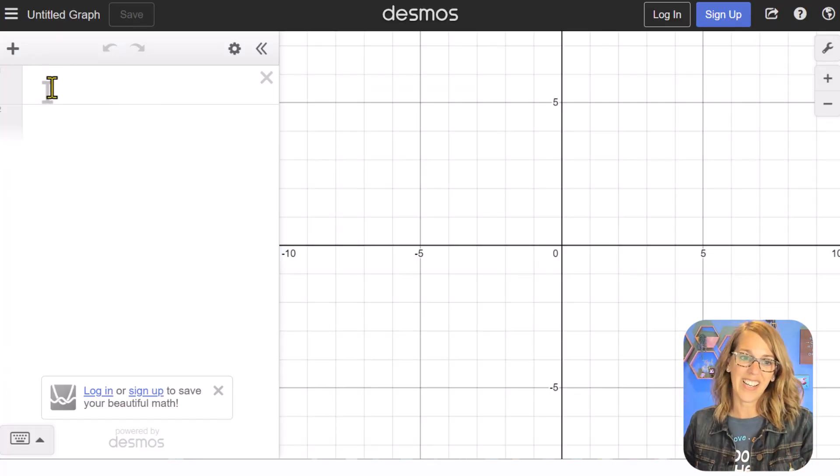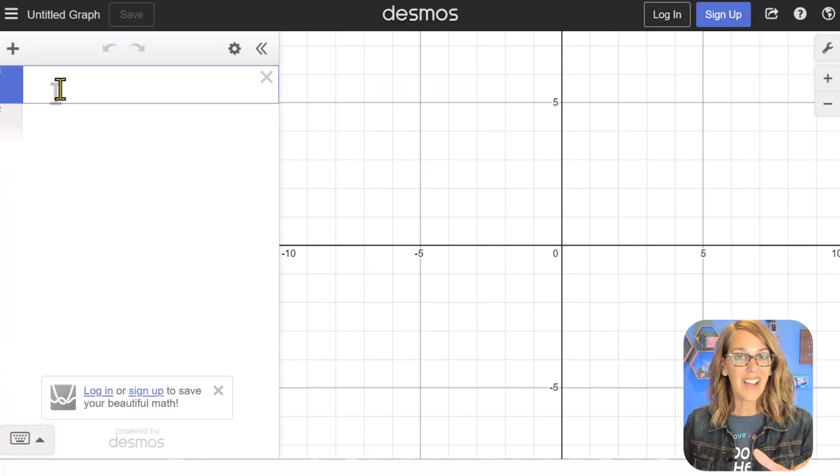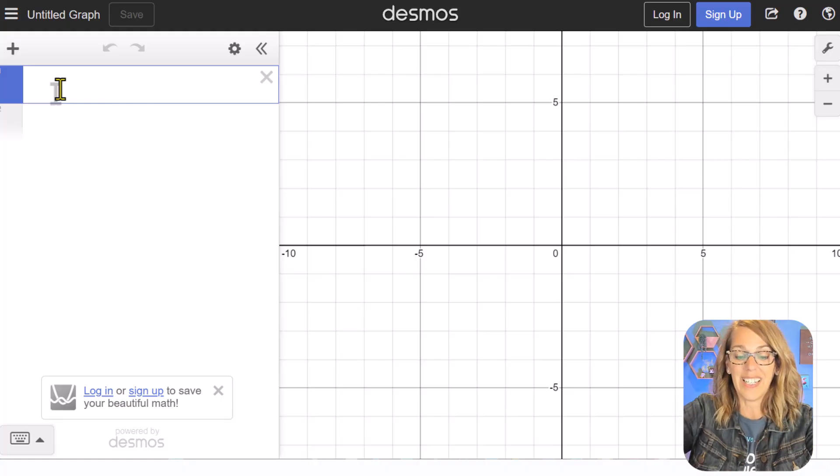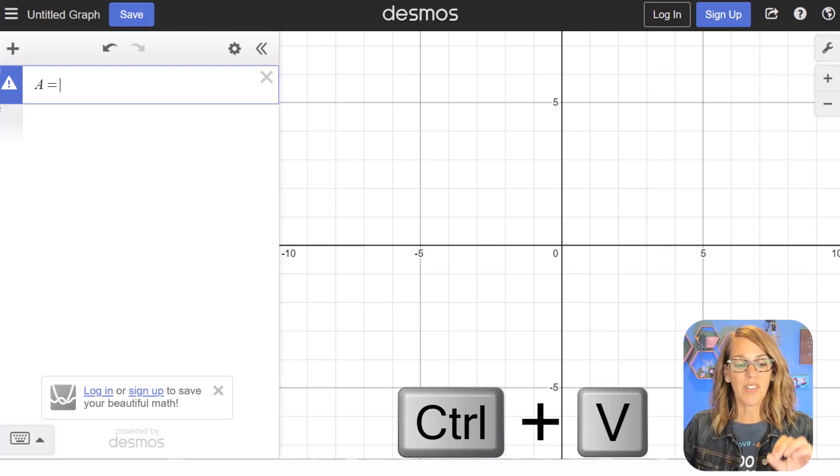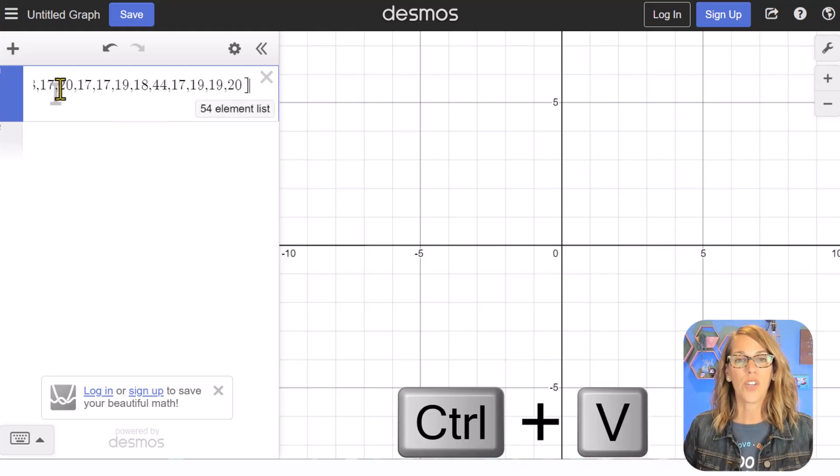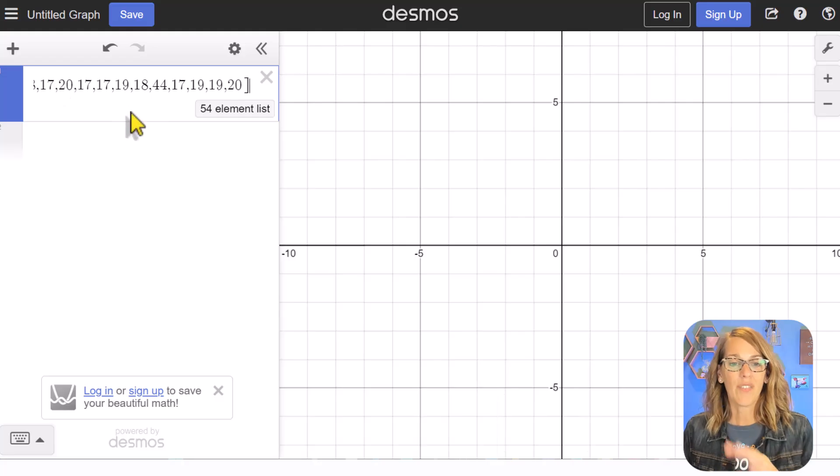Over to the graphing calculator. Before I drop my data into an empty cell, let's click on that cell and give our data list a name. It's going to make life so much easier. I'm going to call it A for age equals. Now I'm ready to drop it in. I'm going to do a ctrl V as in victor, or you would do a command V. So I've got my entire 54 element list.